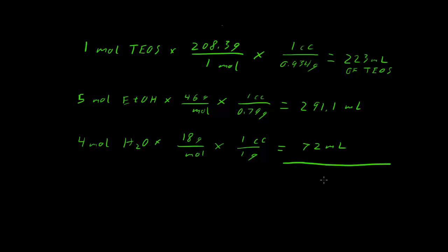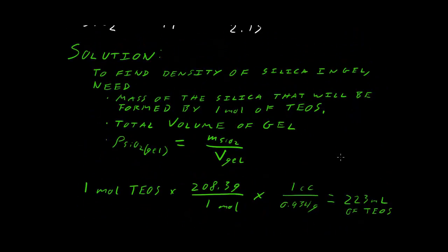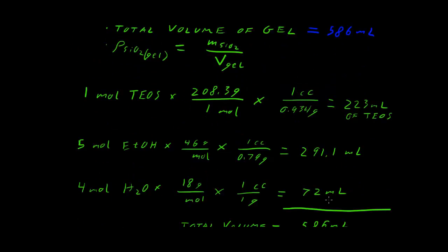If we add all of these together, we get the total volume of our gel, because we put this much of each component in. We're making an assumption here that the gel doesn't shrink, which is a pretty fair assumption. So we put it in, it gels, it doesn't change in volume. That 586 milliliters is the total volume of our gel. That's one of our pieces of information, so total volume of the gel equals 586 milliliters.